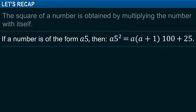If a number is of the form a5, then a5 square is equal to a times a plus 1 times 100 plus 25.